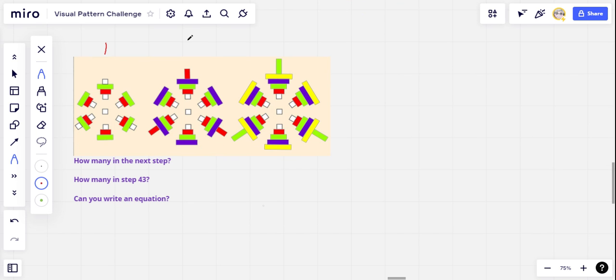So that's our pattern. Here's step 1, step 2, step 3. Your challenge, and this is a tough one today, is to predict the value of the unit blocks in step 4.